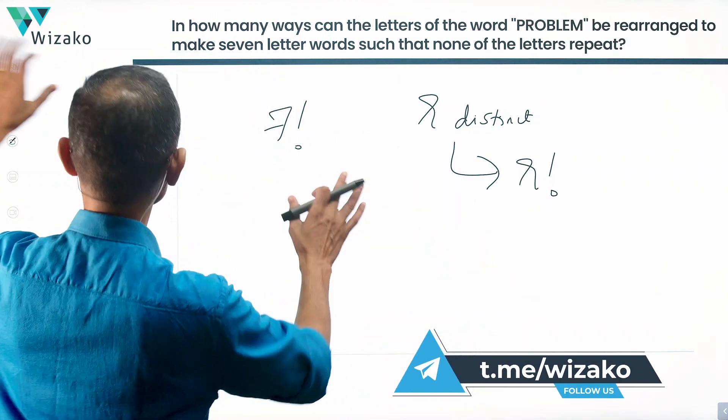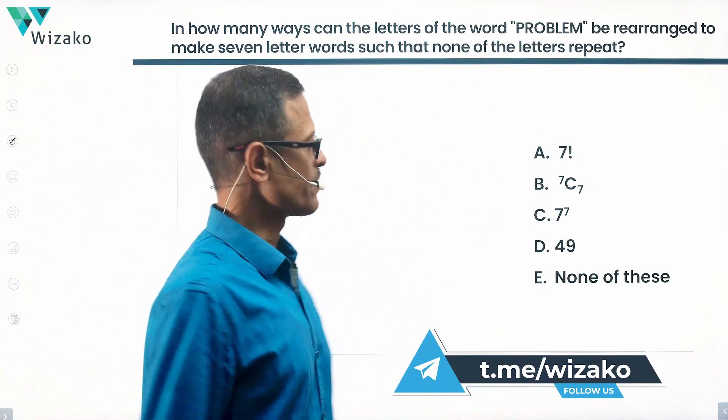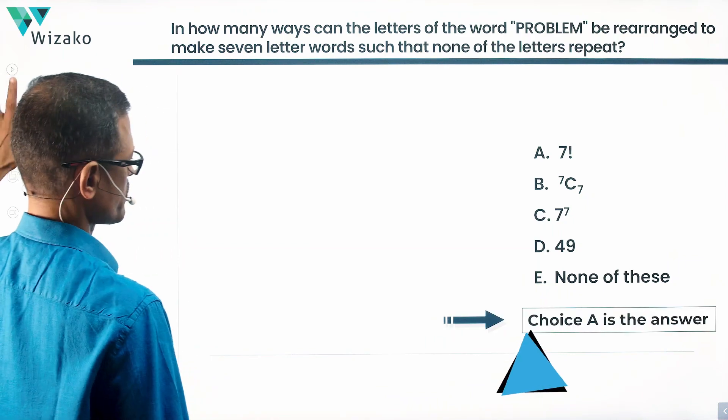So the given question should take us 10 seconds. It's like a textbook question, formula question. So got the answer. Factorial seven is the answer. Choice A is the answer to this question.